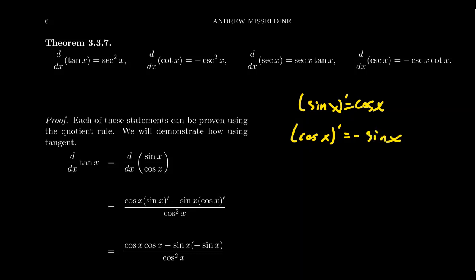Using those two observations we want to consider the derivatives of the other four trigonometric functions: tangent, cotangent, secant, and cosecant. We will see in just a second that the derivative of tangent is equal to secant squared, the derivative of cotangent is equal to negative cosecant squared, the derivative of secant is equal to secant times tangent, and the derivative of cosecant is negative cosecant times cotangent.